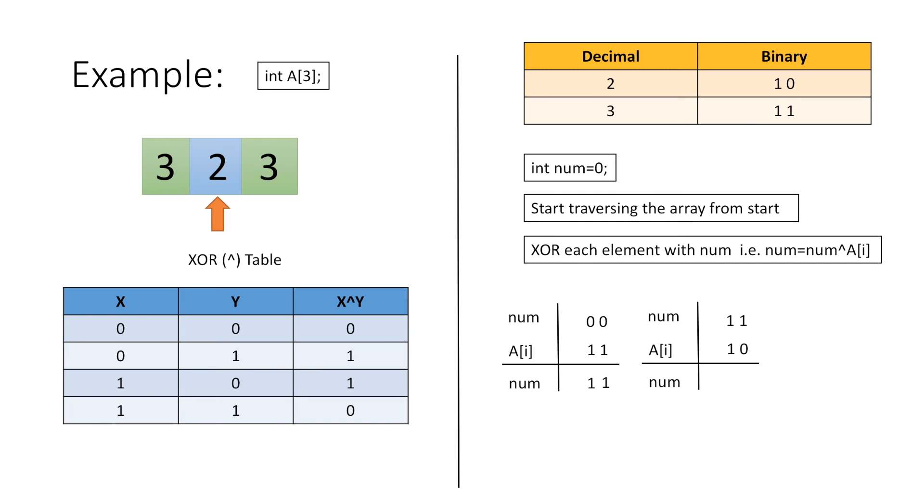Then we again perform the XOR operations starting from the right. For 1 and 0 the XOR will be 1, and for 1 and 1 as both the bits are similar, the XOR will be 0. Thus our variable num now contains 01 which is 1 in decimal form.